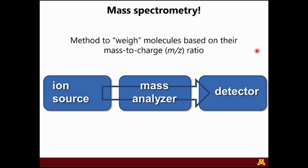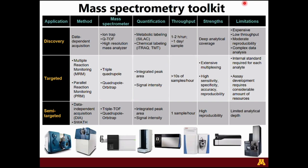My favorite analytical tool of choice is mass spectrometry. Mass spec is a method that enables us to weigh molecules based on their mass-to-charge ratio. The three main components are an ion source, a mass analyzer, and a detector. Throughout this talk, I'll reference what I'm terming a mass spec toolkit. There are three main applications: discovery, targeted, and semi-targeted — though I won't be talking about semi-targeted today. Each application has specific methods, dedicated mass spec instruments, different quantification methods, throughput, and both strengths and limitations.